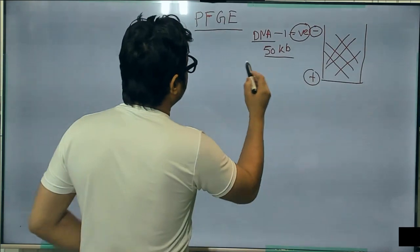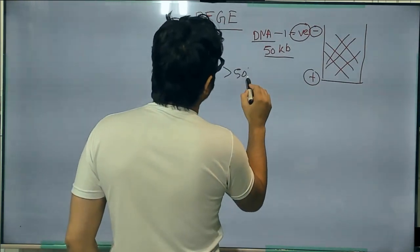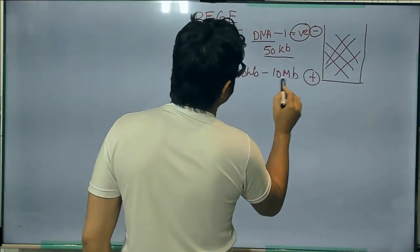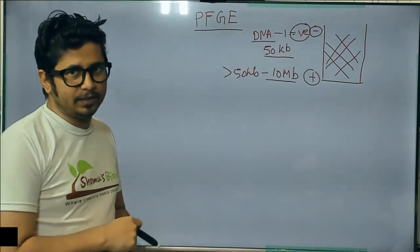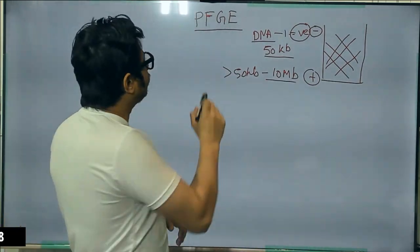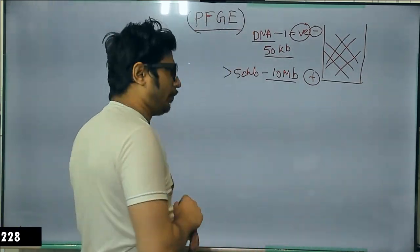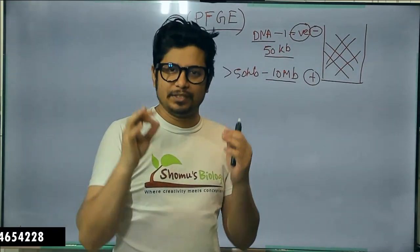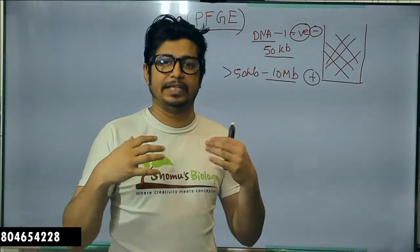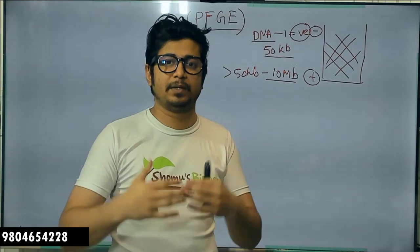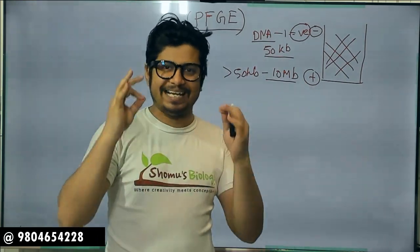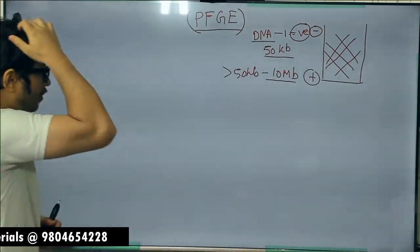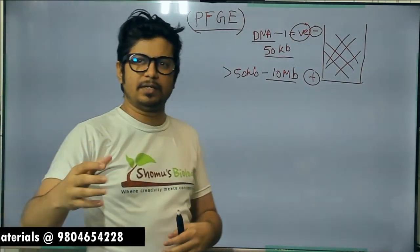For DNA fragments which are more than 50 kb in length — but near or less than 10 mb — these can be resolved well utilizing pulse-field gel electrophoresis. So PFGE is used to separate a mixture of DNA fragments which are more than 50 kb and less than 10 mb.